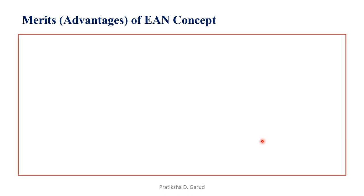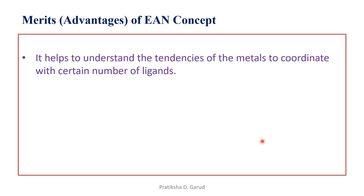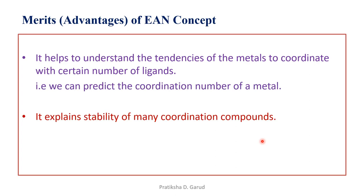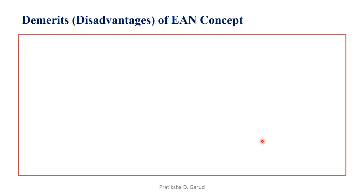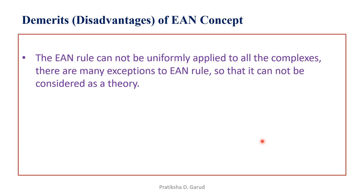These are some of the examples by which we have calculated the effective atomic number. Now, merits or advantages of the EAN concept. By using this, it helps to understand the tendencies of the metal to coordinate with a certain number of ligands — that is, we can predict the coordination number of a metal. The second advantage is that it explains the stability of many coordination compounds. The complexes which obey the EAN rule are considered to be stable. Then, the demerits or disadvantages of the EAN concept: this EAN rule cannot be uniformly applied to all complexes. There are many exceptions to this EAN rule, so it cannot be considered as a theory.